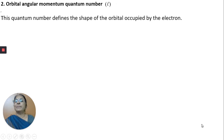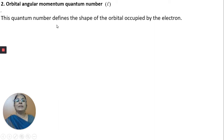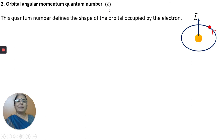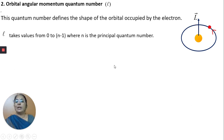The next quantum number is the orbital angular momentum quantum number, denoted as L. This quantum number arises due to the angular momentum from the electron's orbital motion, and it defines the shape of the orbit occupied by the electron. The electron revolves in its orbit, and the angular momentum arising due to this motion is called the orbital angular momentum. L takes values from 0 to n minus 1, where n is the principal quantum number.